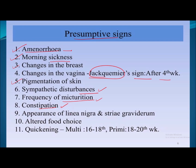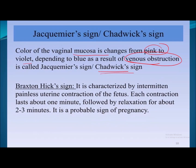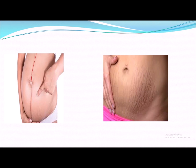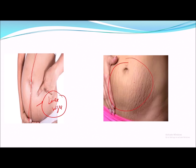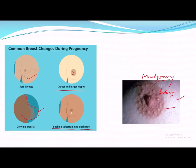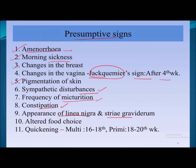Various sympathetic disturbances are also present: frequency of urination in the early period, intestinal disturbances, and constipation. Linea nigra and striae gravidarum are also signs of pregnancy. Linea nigra is a midline discoloration due to increased estrogen and progesterone. Striae gravidarum are bluish-purple striations caused by overstretching of the abdomen, damage to underlying collagen, vascular changes, and connective tissue changes.